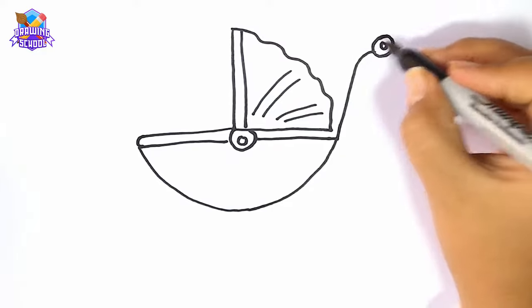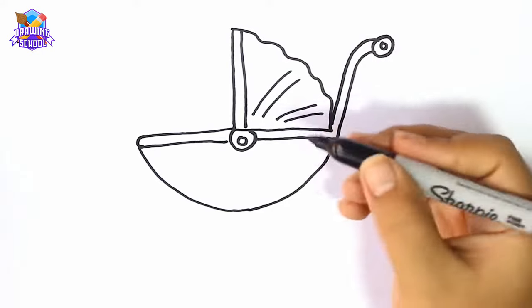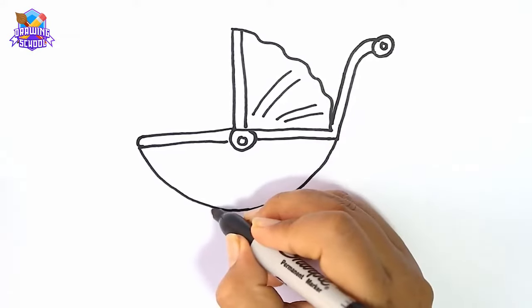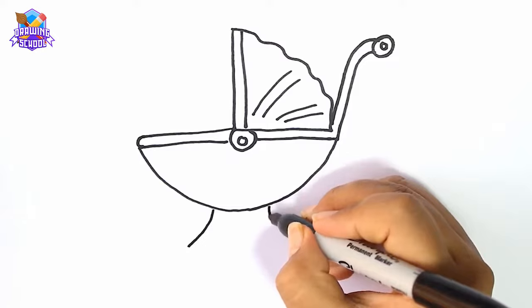A circle for the handle, and another curved line to finish it. We add some wheels to the stroller.